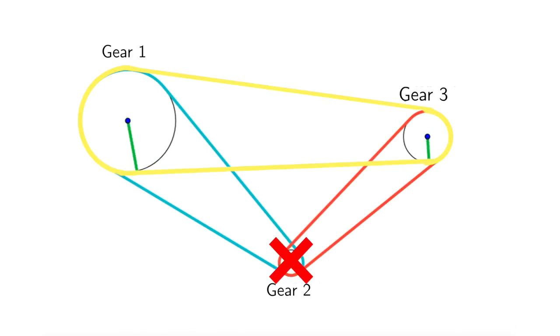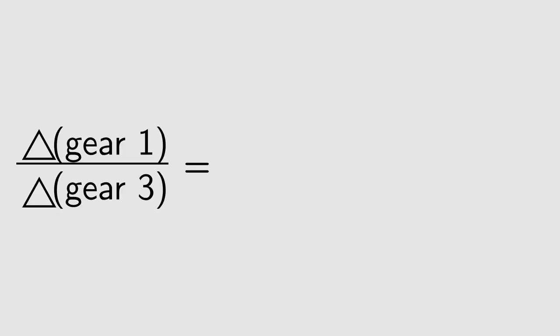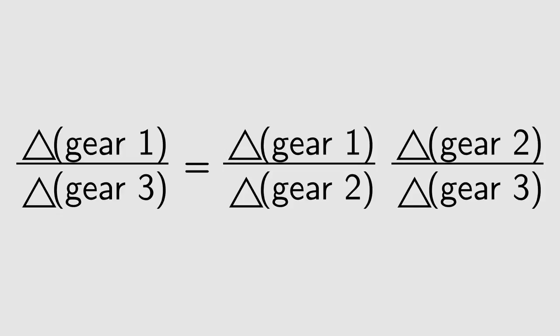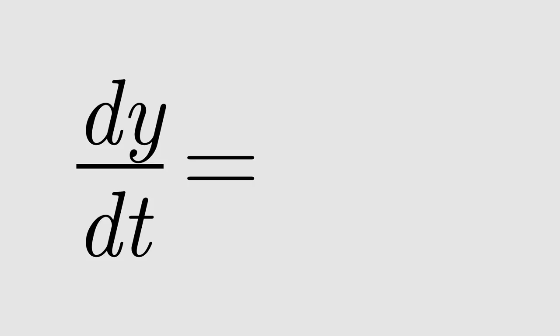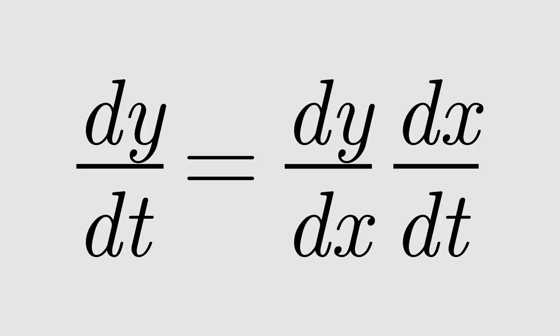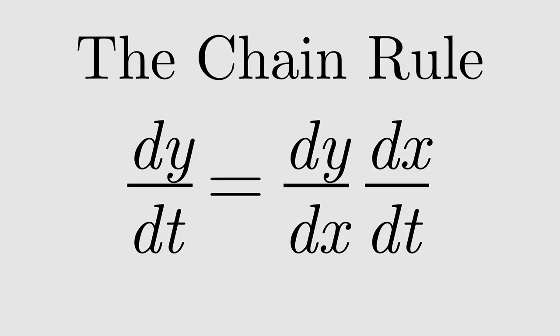In other words, the rate of change between gears 1 and 3 is the same as the rate of change between gears 1 and 2 times the rate of change between gears 2 and 3. More abstractly, the total rate of change is the product of the two intermediate rates of change. That's essentially what the chain rule of calculus says.